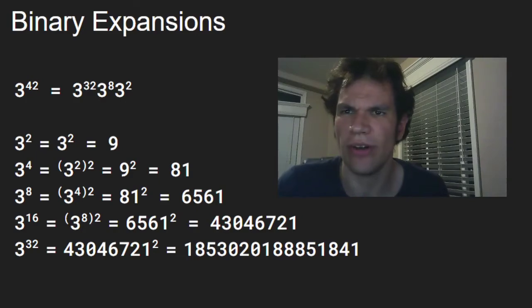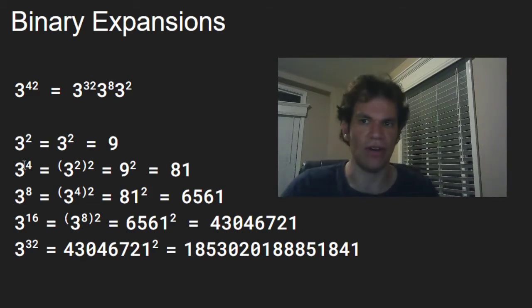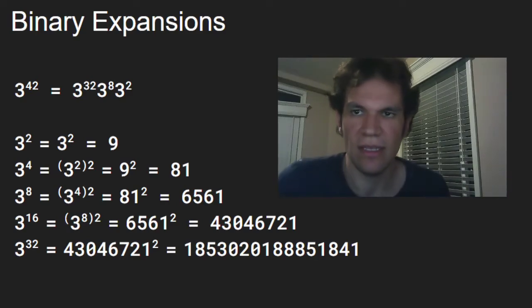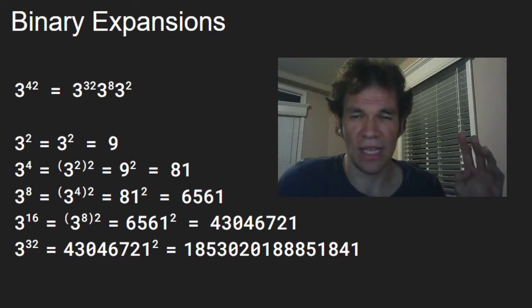We can square 3 multiple times in order to get 3 to the power of 2, 3 to the power of 4, 3 to the power of 8, 3 to the power of 16, and 3 to the power of 32. Each time we square the number, it's only a single multiplication. So we raise it up 3 to the power of 32 with only 1, 2, 3, 4, and 5 multiplications.